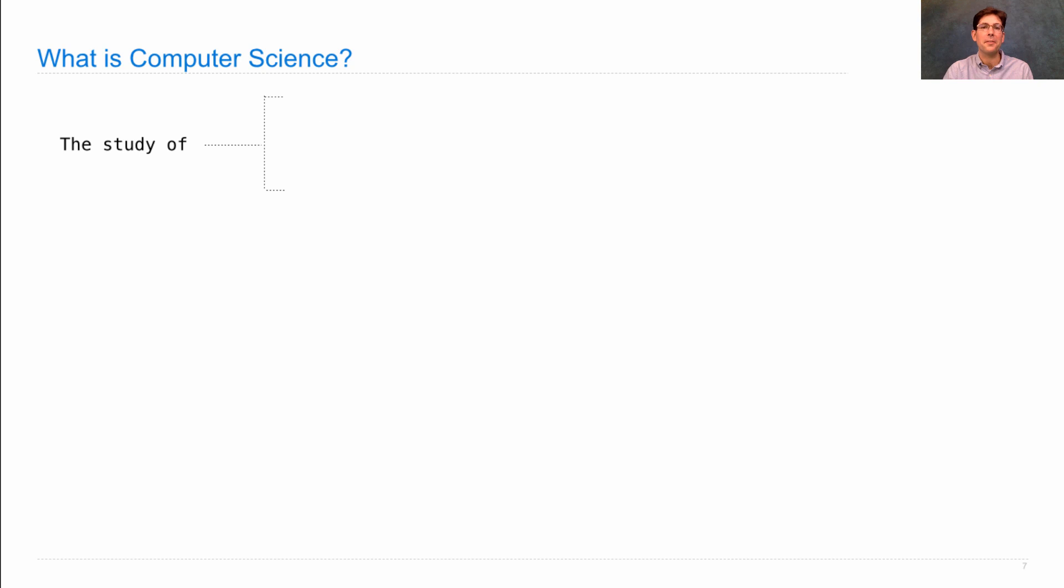And computer scientists worry about three things: What problems can be solved using computation? How to solve those problems? And what techniques lead to effective solutions, so that by solving these problems we can actually improve the world around us.